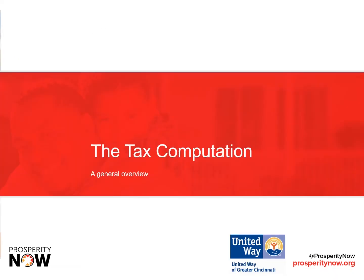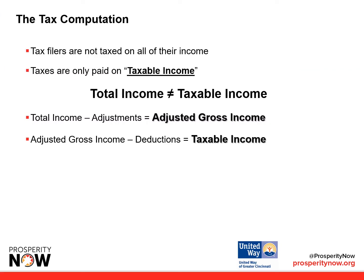Let's cover the tax computation. Tax filers are not taxed on all of their income — taxes are only paid on taxable income. Total income minus adjustments equals adjusted gross income. Adjusted gross income minus deductions is then calculated into your taxable income.